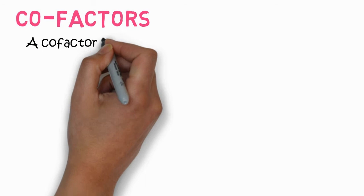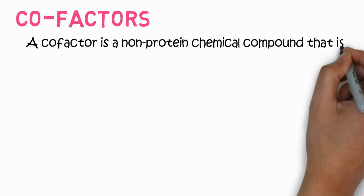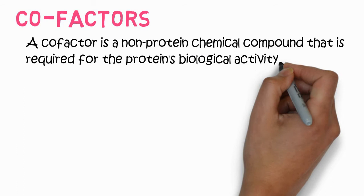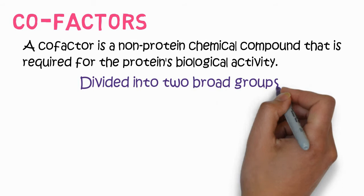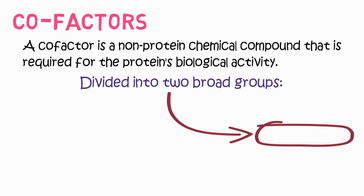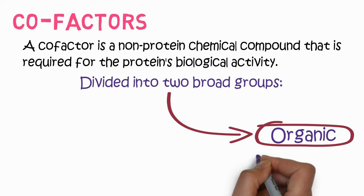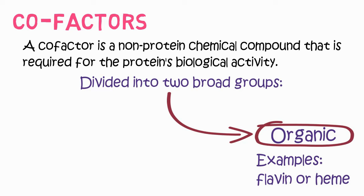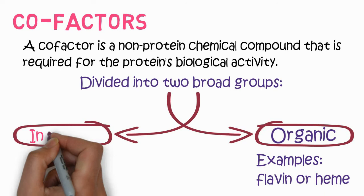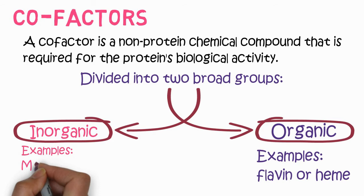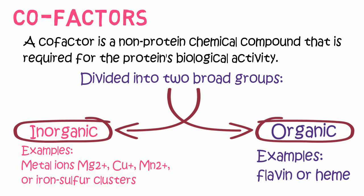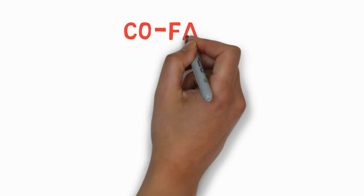Enzyme activity is lost if they are denatured. They may contain cofactors such as metal ions or organic molecules like vitamins. A cofactor is a non-protein chemical compound that is required for the routine biological activity of an enzyme. Cofactors are divided into two broad groups: inorganic cofactors, and organic cofactors. Organic cofactors include flavins and heme, while inorganic cofactors include metal ions like magnesium, copper, iron, or iron-sulfur clusters.